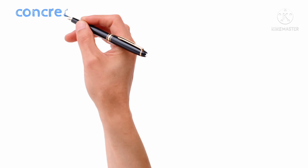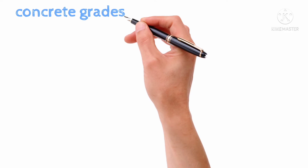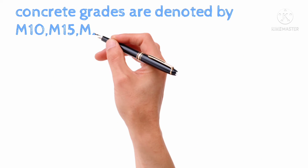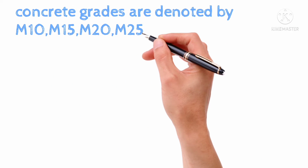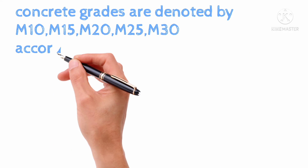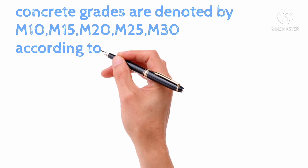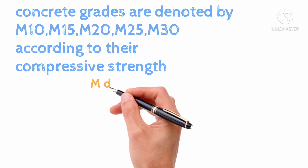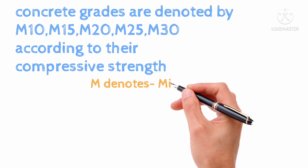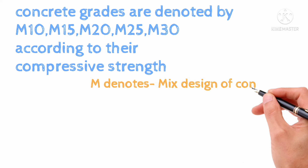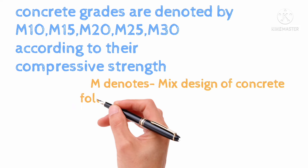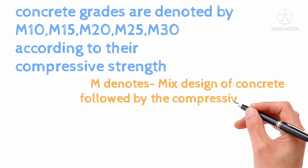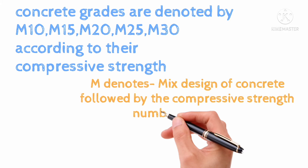Concrete grades are denoted by M10, M15, M20, M25, and M30 according to their compressive strength. M denotes the mix design of concrete, followed by the compressive strength number in N per square millimeter.